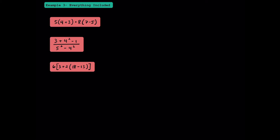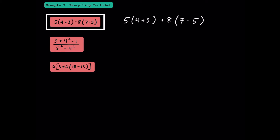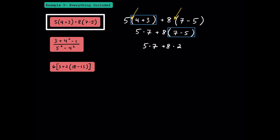Here in example 3, we're going to evaluate some expressions that also have grouping symbols. For this first one, we have two sets of parentheses, so we're going to do the one on the left first. 4 plus 3 is going to be 7, so we're going to have 5 times 7 plus 8 times the quantity of 7 minus 5. Now let's solve what's inside this grouping symbol. 7 minus 5 is going to equal 2, so we can write 5 times 7 plus 8 times 2. Remember that this 5 and this 8 are multiplying by what's inside the parentheses because there's no symbol between them — whenever you don't see an operation, it's safe to assume that you're multiplying. Next, we're going to multiply 5 times 7 to get 35, then 8 times 2 to get 16, and finally add 35 plus 16 to get 51.